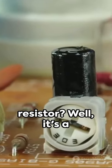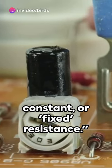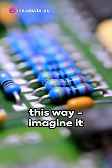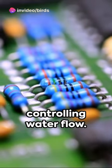So what's a fixed resistor? Well, it's a resistor with a constant or fixed resistance. Let's visualize it this way. Imagine it working like a pipe controlling water flow.